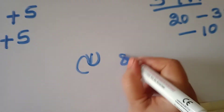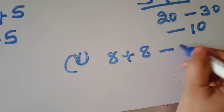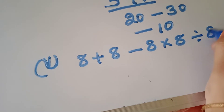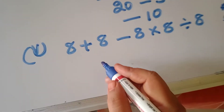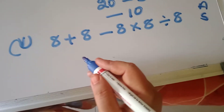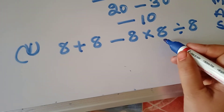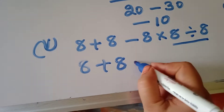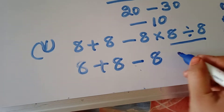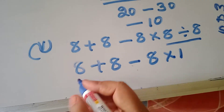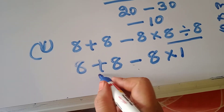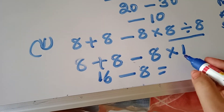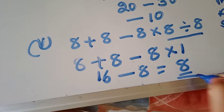Fifth one: 8 plus 8 minus 8 into 8 is divided by 8. First, take 8 divided by 8, which equals 1. Then 8 plus 8 is 16, and 8 into 1 is 8. So 16 minus 8 equals 8, which is the answer.